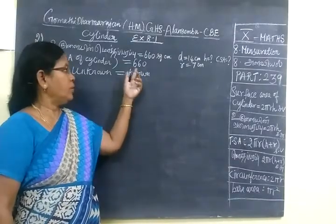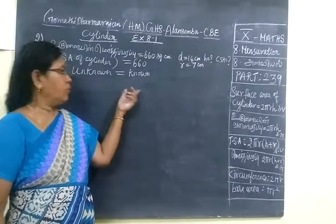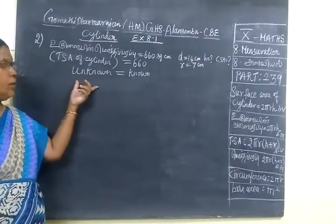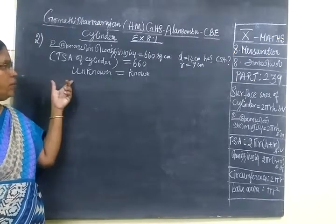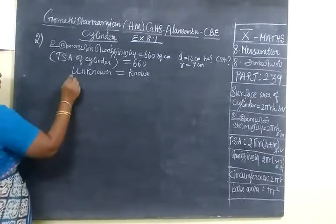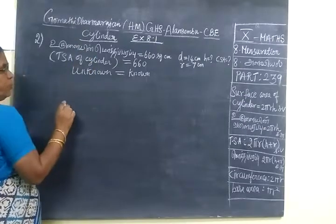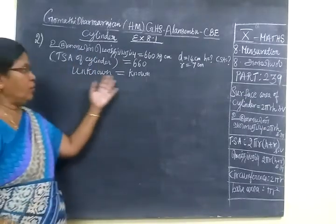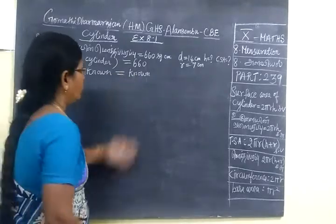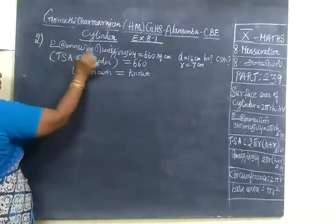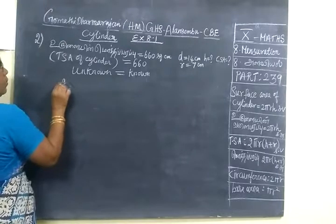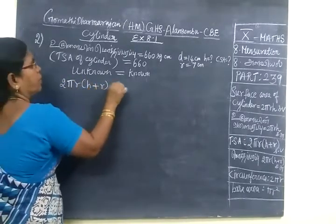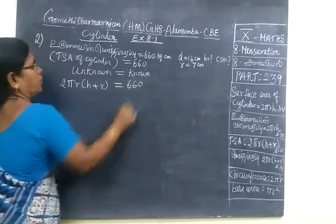Answer is 660. It is the formula we use. We substitute the formula. This formula is equal to, we are equating the formula. Unknown equal to known, we are equating to formula. This formula 2πr bracket h plus r equal to 660.